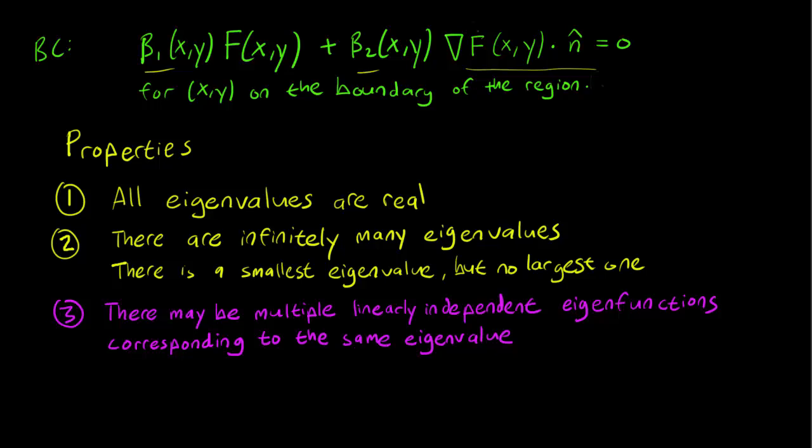The third property I wrote in red because this is something that is different from the one-dimensional case. For a single eigenvalue, it is possible to have multiple eigenfunctions. And the word linearly independent over here simply means that these are actually different eigenfunctions. We're not just obtaining eigenfunctions by multiplying another eigenfunction by a constant. So these are actually, honest to goodness, different functions.